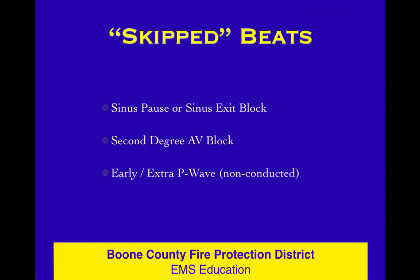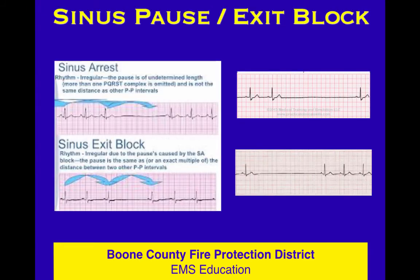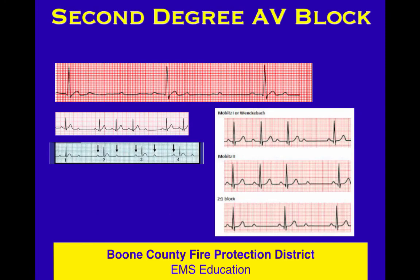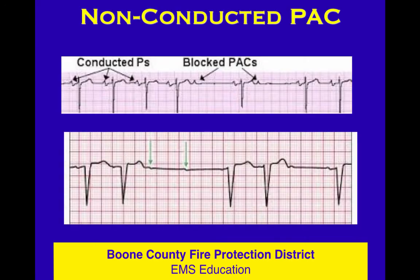So looking back at dropped beats and skipped beats: there are cases with a pause but no P wave — that's a sinus block or sinus pause. Then there are times when a P wave comes on time, normal, just like the others, but simply does not conduct — that's second degree AV block of the various types, which we'll dig into later. And then there's one that is early and doesn't look like the others — that's a non-conducted PAC. Skipped beats: three kinds. Is there a P wave? If so, is it like the others, and was it early? That's the takeaway.